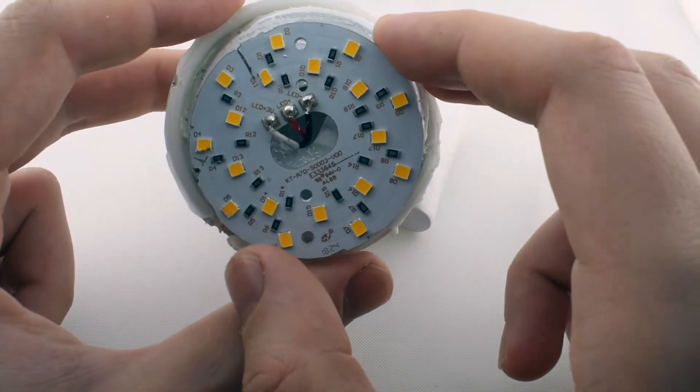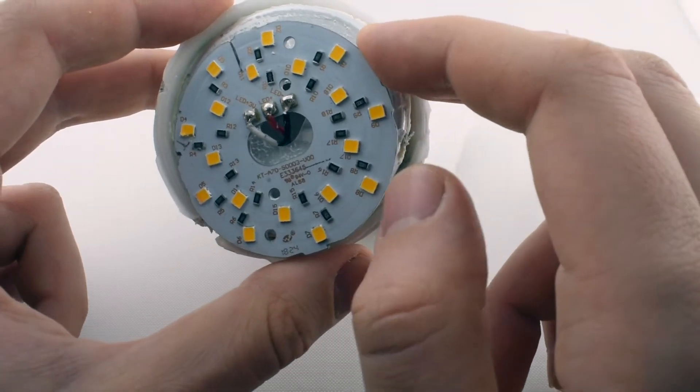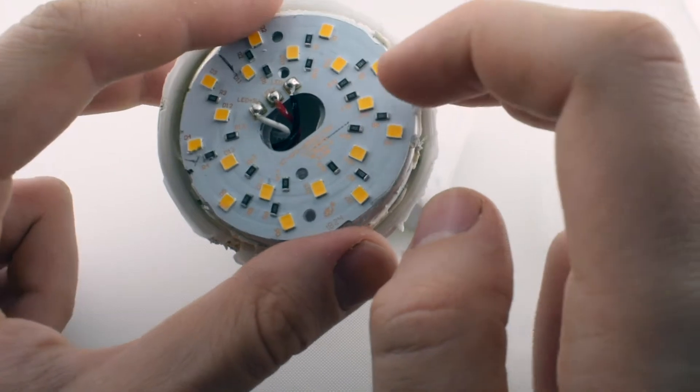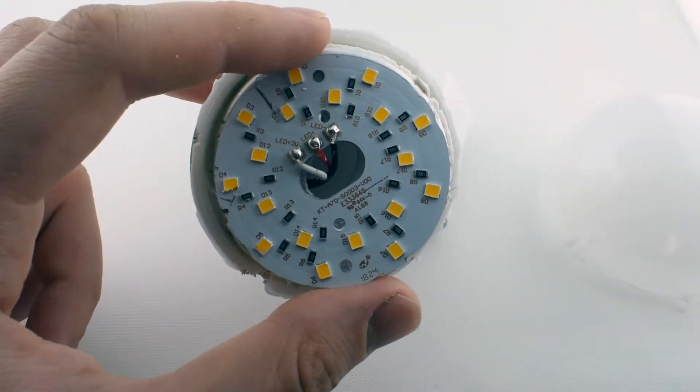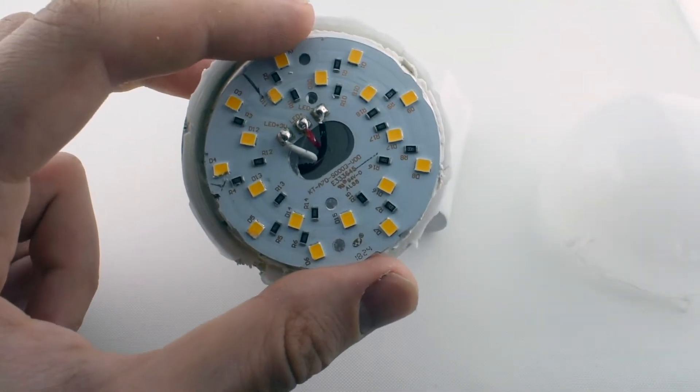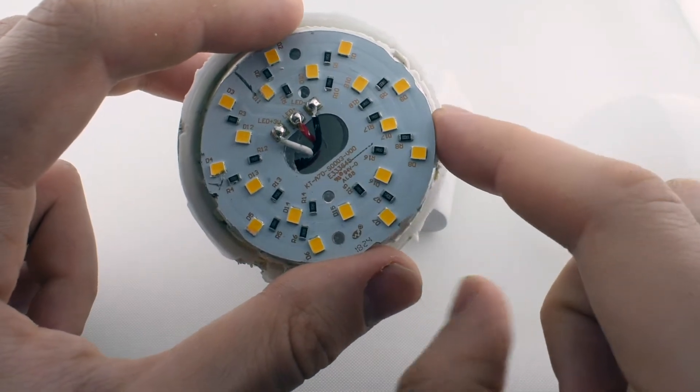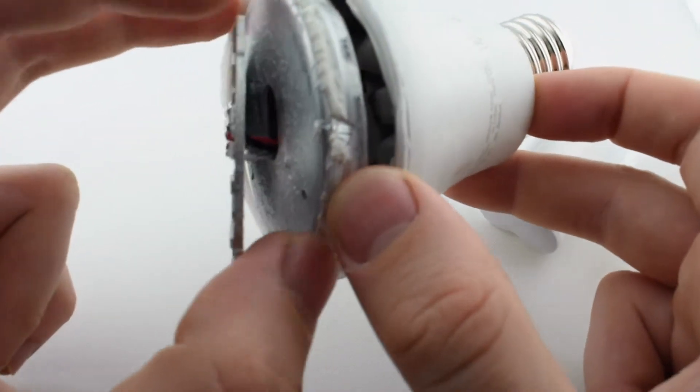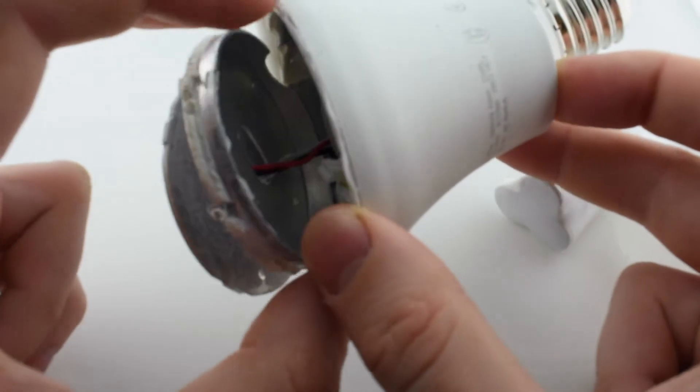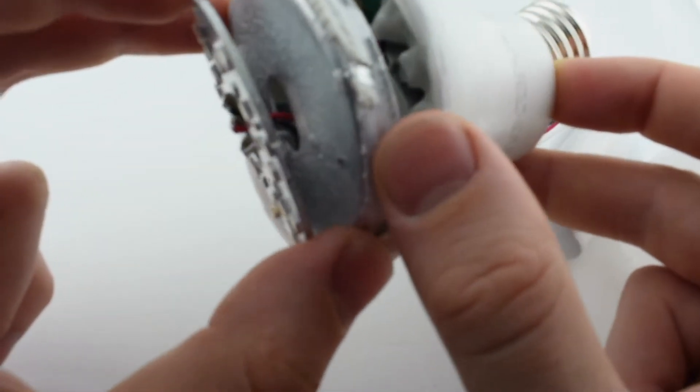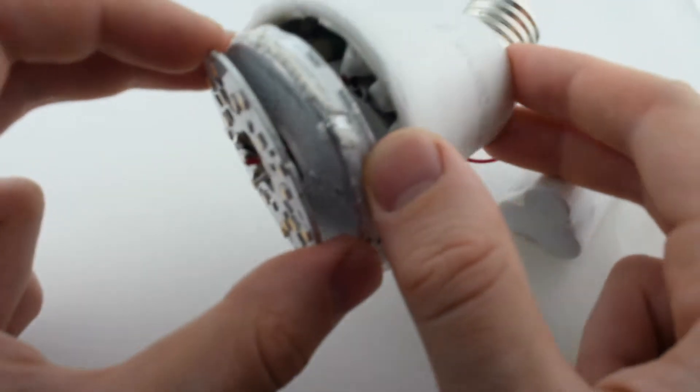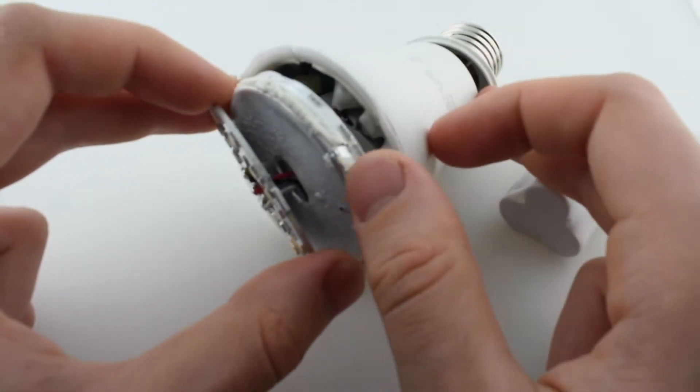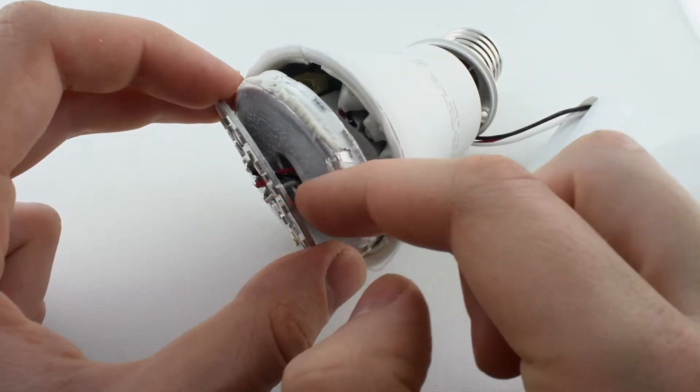And under there we have the LEDs. I'm not sure what kind of LEDs they are, but they seem to be the same kind of LEDs that you found in the new flashlights that they also got. And you have this big aluminum piece here on the underside of the LEDs, and also some cooling paste there, that white paste on the underside there, to transfer the heat.